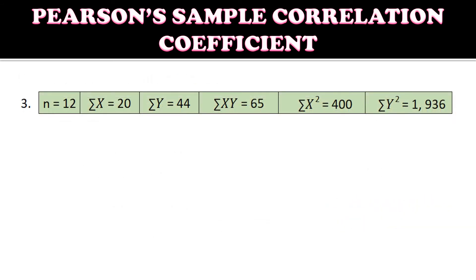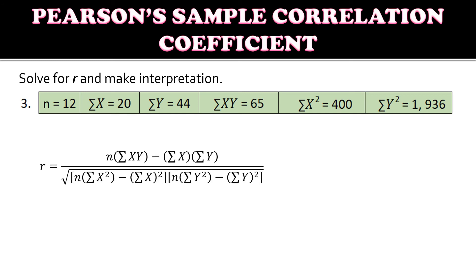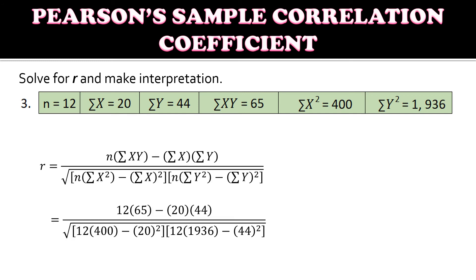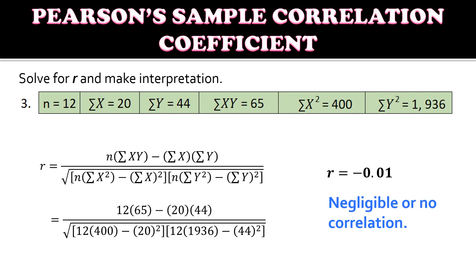For the last example, using the same formula and substituting the values, the computed r is negative 0.01. This means there is negligible or no correlation.